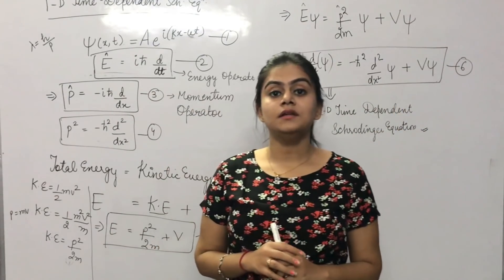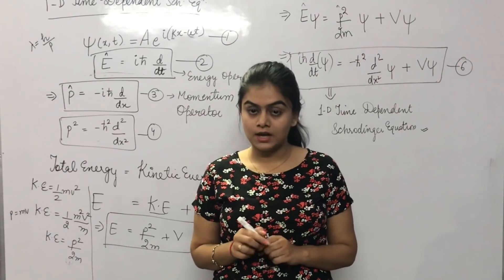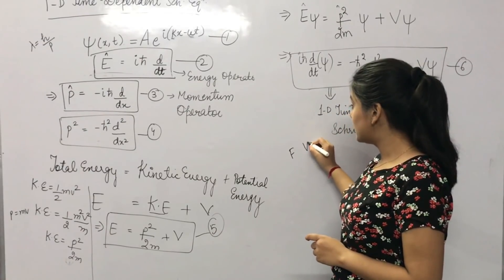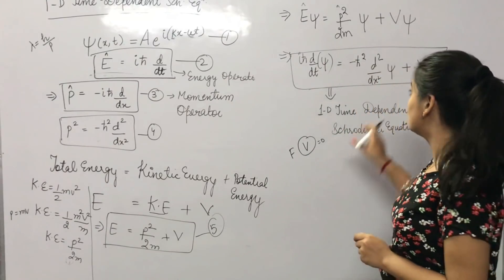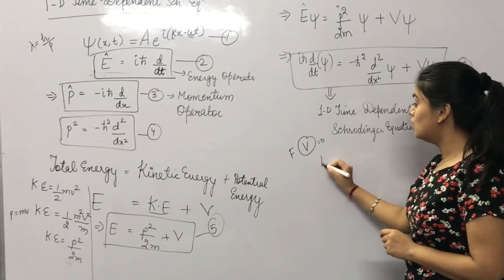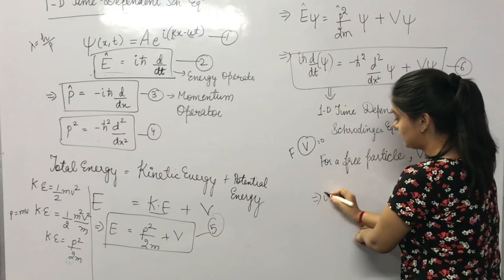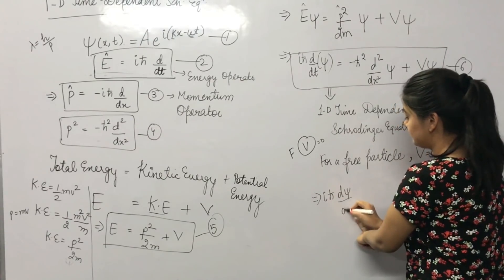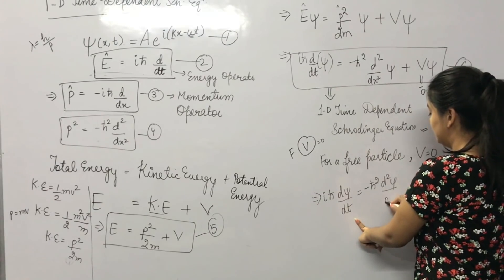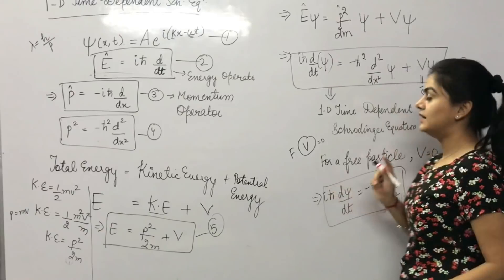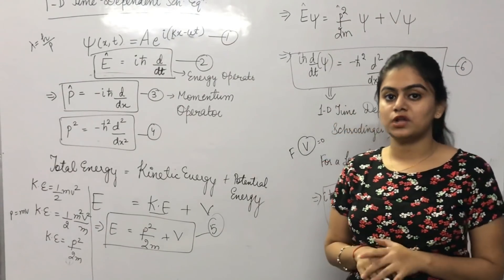When the particle is in free motion — moving freely with zero net force — the potential energy V is also zero. So for a free particle, V equals zero, and the equation becomes: i h-bar d Psi by dt equals minus h-bar-squared upon 2m times d-squared Psi by dx-squared. This is the 1D time-dependent Schrödinger wave equation for a freely moving particle under no potential. Thank you so much.